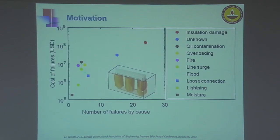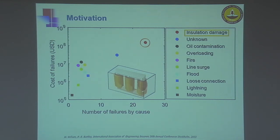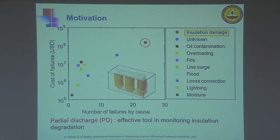An interesting study conducted a decade ago on the analysis of failures of power transformers revealed that the most frequent and costliest reason for transformer failure is damage to the insulation. Just like every one of us, the transformer also experiences a lot of stress during its working, and the insulation weakens as a result of continuously accumulated electrical, thermal, and mechanical stresses over long years of operation. It has been shown that these weak spots in insulation are prone to what are known as partial discharges, and these discharges act as precursors to transformer failure. Monitoring the level of partial discharge can therefore be an effective tool for ensuring the health of the insulation.